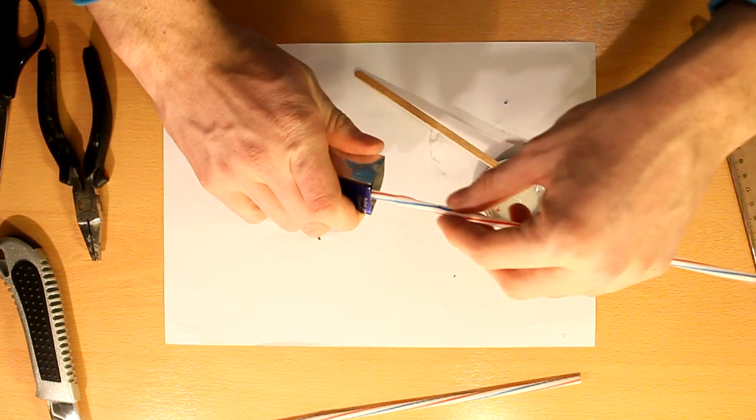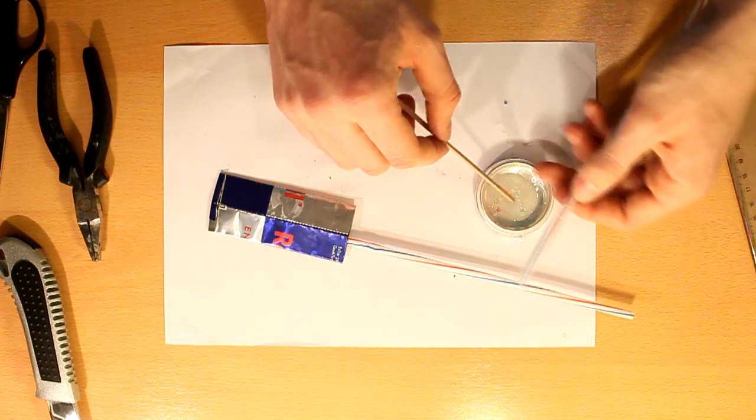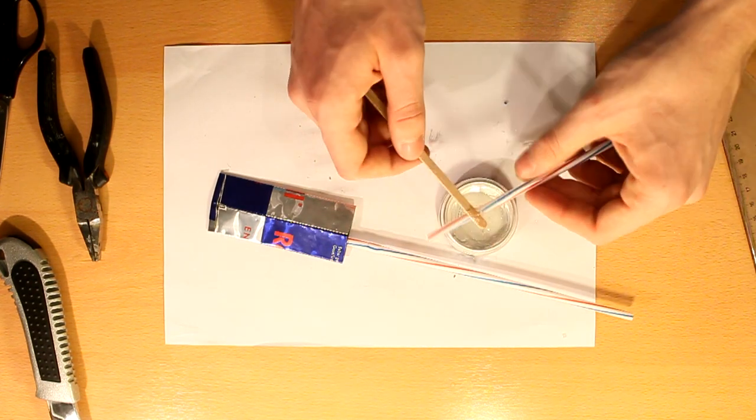You are going to apply it in the part between the end and the foldable part of the straws. Now open your can carefully so you don't cut yourself. And put both of the straws inside.